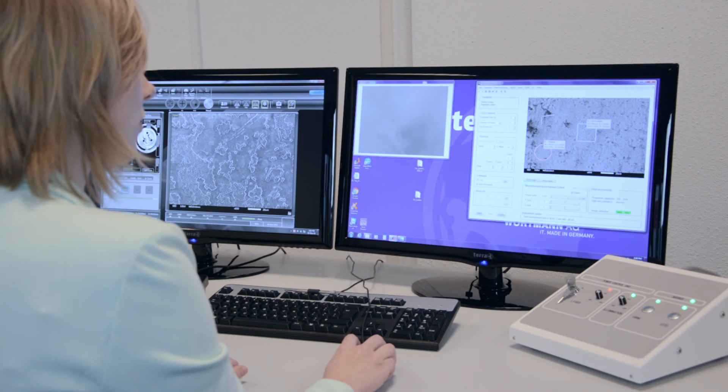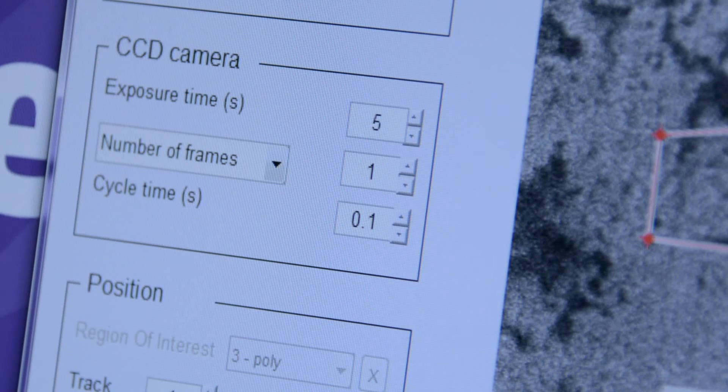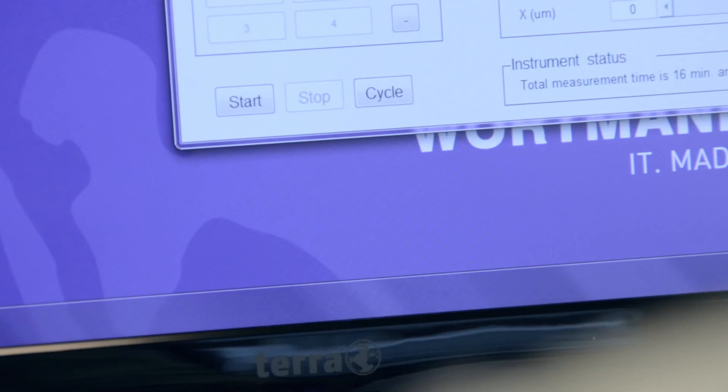For each region of interest, different measurement settings can be selected. The measurement can be started with a simple press on the start button in the software. The measurement is automatically performed without further user activity.